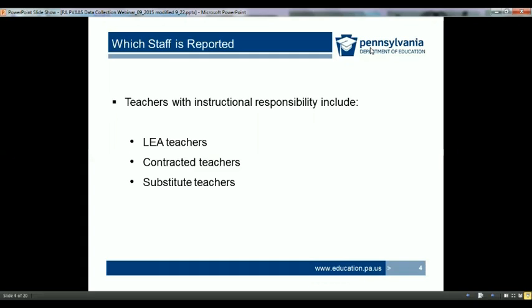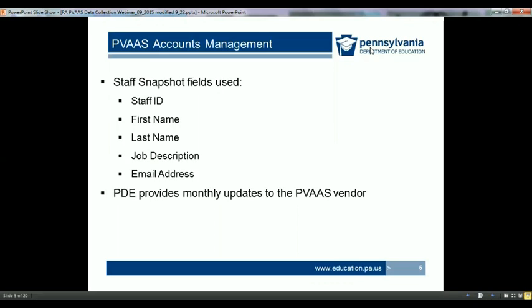Eligible teachers reported in PIMS will be used in PVAS. Eligible teachers are those who are permanent or temporary professional employees, who hold a valid PA teaching certificate, and who have full or partial responsibility for content-specific instruction. For a more detailed discussion of teacher eligibility and content-specific instruction, please review the PDE website. A PVAS account is required for teachers and administrators to access data in the PVAS system. A single login can provide personnel with access to both reports and rosters. Only the staff ID, first name, last name, job description, and email address fields in the staff template are used to create new accounts.